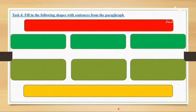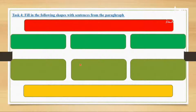Now fill in the following shapes with sentences from the paragraph — the same shapes we filled last time for the advantages paragraph. We have one topic sentence, supporting sentences, details that explain each supporting sentence, and the last one is the concluding sentence. Let's correct it.